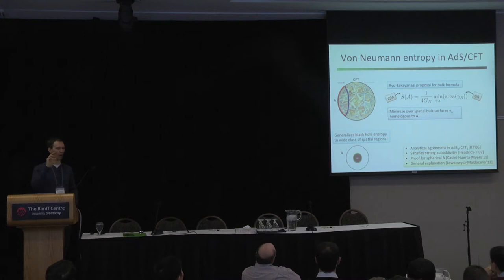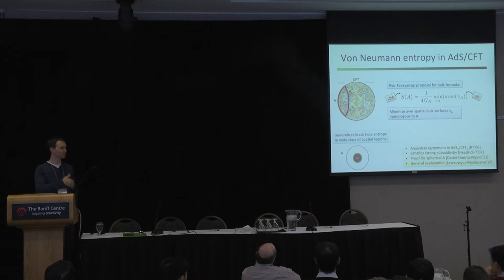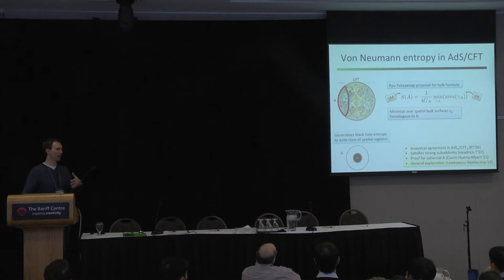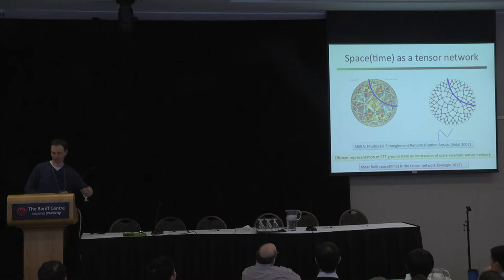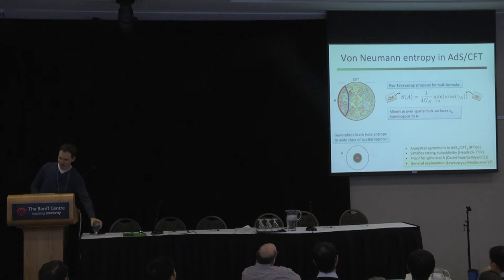This formula generalizes the Bekenstein-Hawking formula for the entropy of a black hole. If we put a black hole deep inside AdS, the minimization procedure hangs up on a surface sitting on the horizon, giving you the area of the horizon. When Ryu and Takayanagi proposed this, they had examples where they calculated on both sides and they matched. The formula was later shown to obey consistency conditions like strong subadditivity, and Lewkowycz and Maldacena gave what amounts to almost a proof.